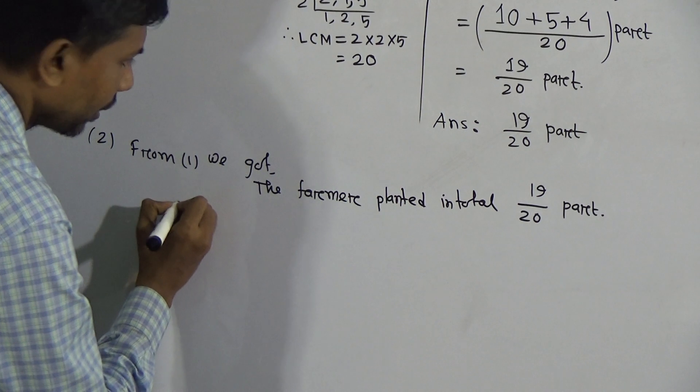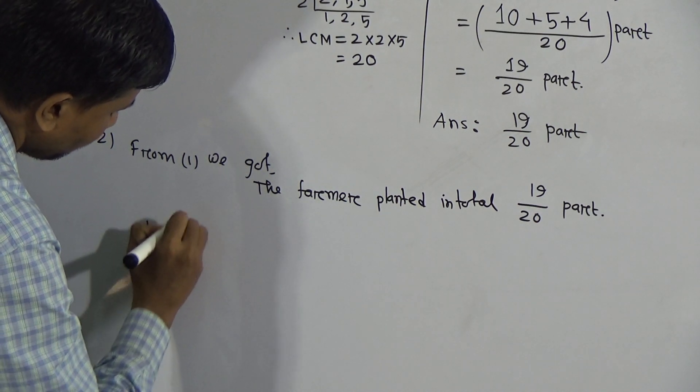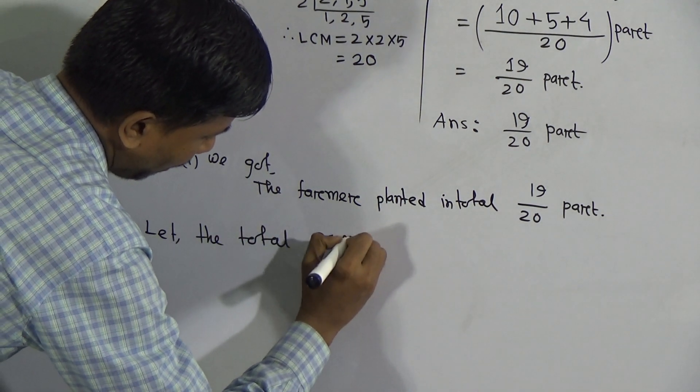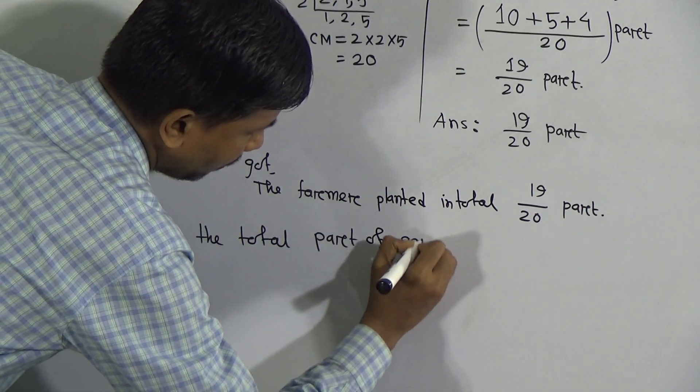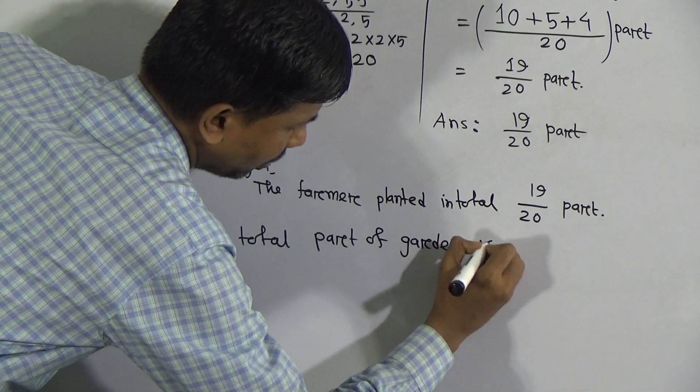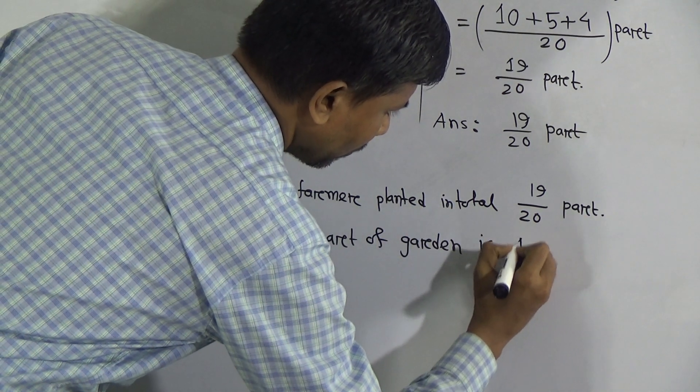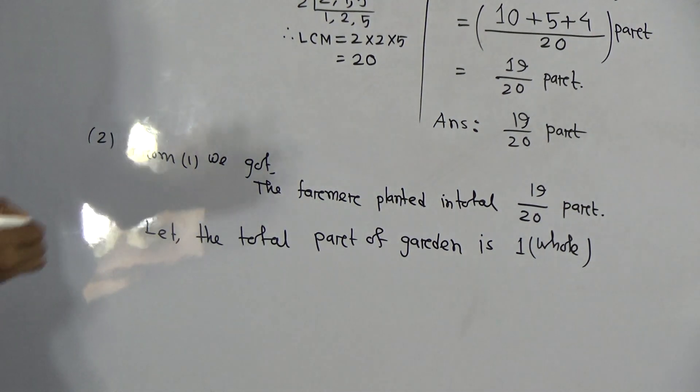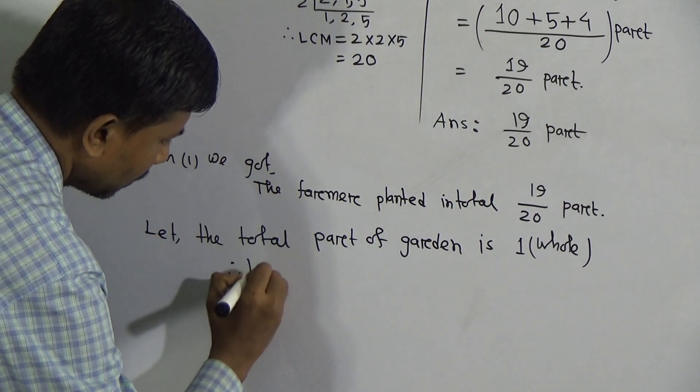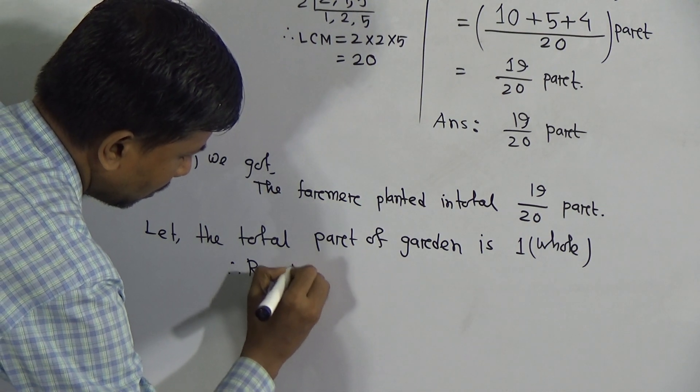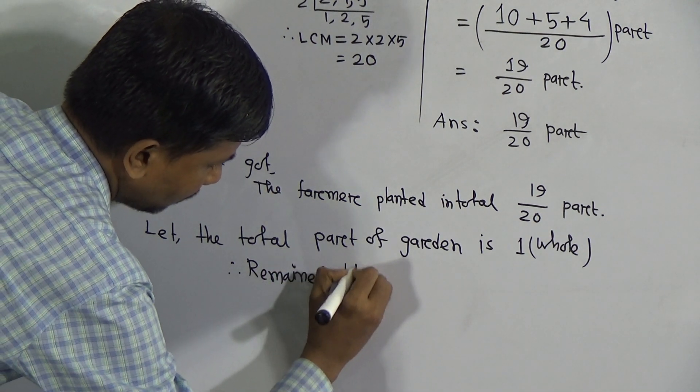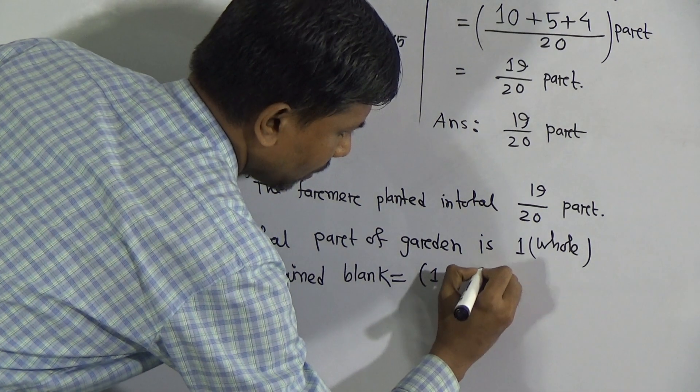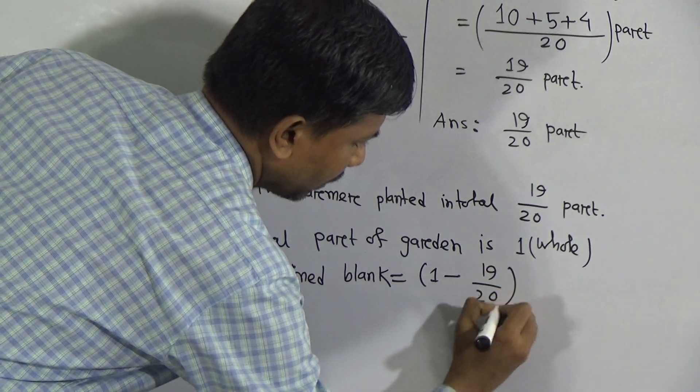From one we got the farmer planted in total 19/20 part. Now let the total part of the garden be one whole. Let the garden in total unit part of the garden is one whole. Now write remained blank: 1 minus 19/20 part.